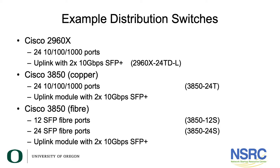We've included some example distribution switches. We mentioned the Cisco 2960X before — in the edge case it can also be used in the distribution case, with 24 10/100/1000 ports and two 10 gig uplink ports. Moving up, the Cisco 3850 introduces lots of layer 3 features over the 2960X but otherwise looks very similar, and of course you don't need those layer 3 features.